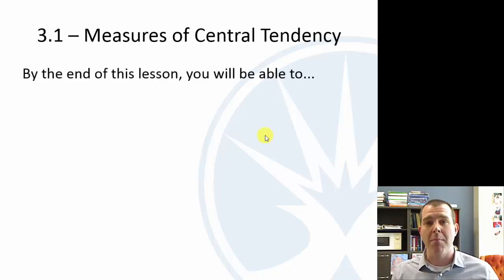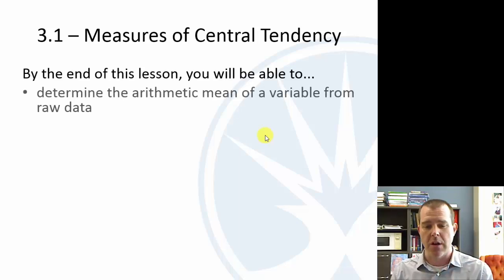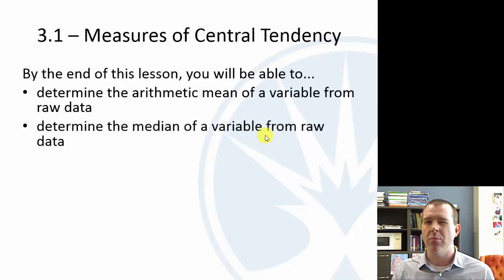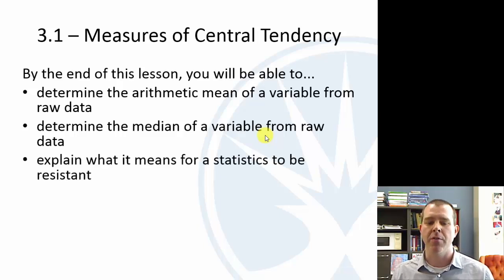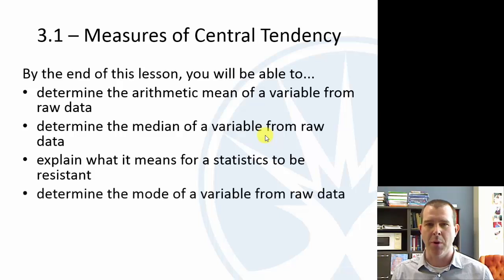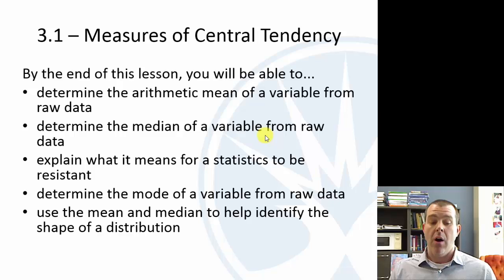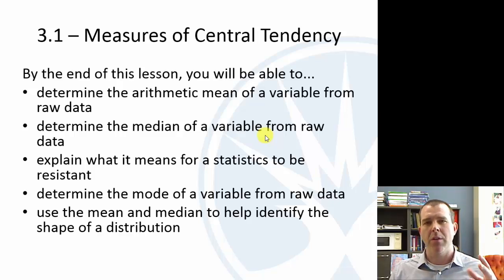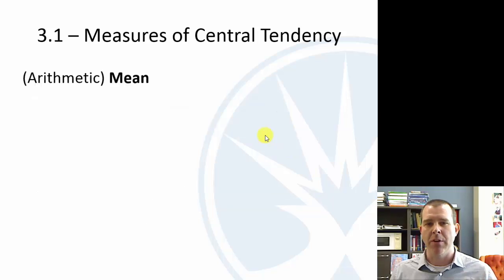Looking at the first section, we're looking at measures of central tendency. So we have a group of data — how would we describe the center? We're going to talk about the arithmetic mean, the median, what it means for a statistic to be resistant, the mode, and what the mean and median tell us about the shape of the distribution.